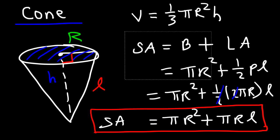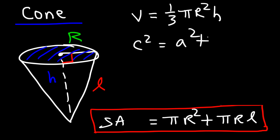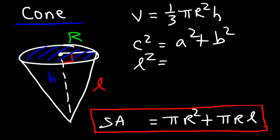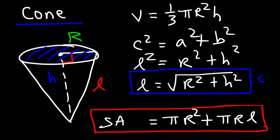To find the slant height L, use the Pythagorean theorem. There is a right triangle with R, H, and L as the three sides. Since L is the hypotenuse, L squared equals R squared plus H squared, so L equals the square root of R squared plus H squared. To calculate the surface area, first find the slant height, then use that with the radius.